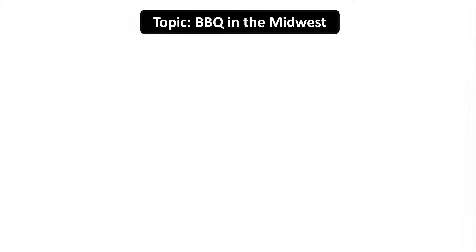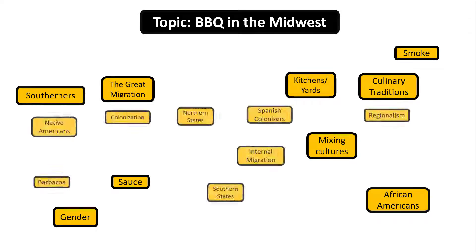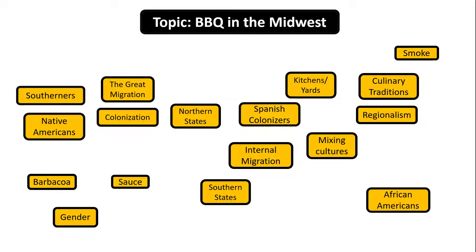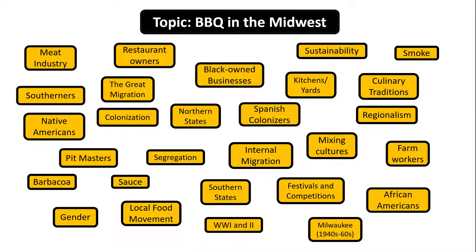To start mapping, I'll think of as many concepts and terms as possible that are connected to my general topic of barbecue in the Midwest. It helps to take a few minutes to free write or list your ideas as they come to mind. Next, take the list of concepts and terms and organize them thematically.